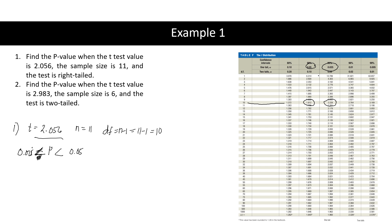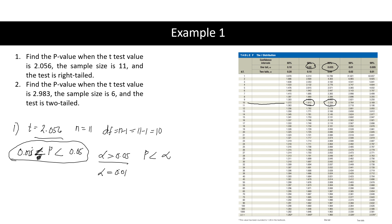This means the p-value is between 0.025 and 0.05. If alpha is 0.05, you would reject the null hypothesis since the p-value is less than alpha. But if alpha is 0.01, you would not reject the null hypothesis because the p-value is greater than 0.01 — meaning the p-value is greater than alpha, so we do not reject.